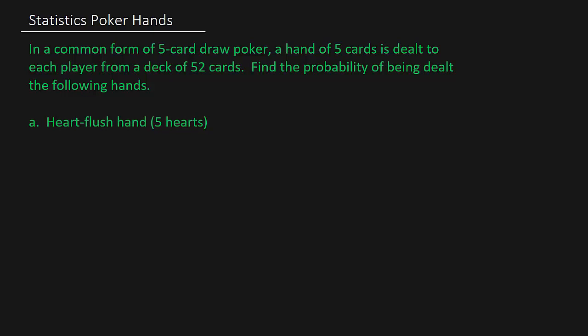What's up everybody? Today we are going to look at some statistics and we're going to learn how to calculate the probability of getting some poker hands. In a common form of five card draw poker, a hand of five cards is dealt to each player from a deck of 52 cards. Find the probability of being dealt the following hands.